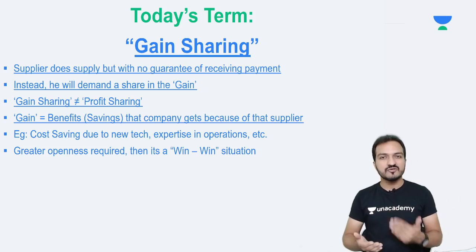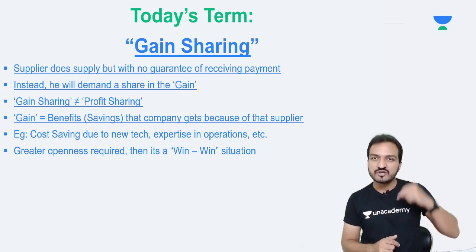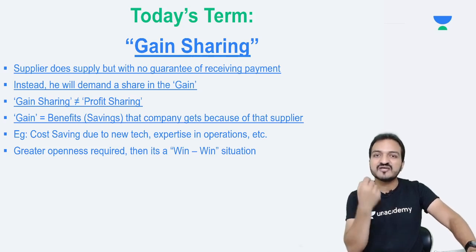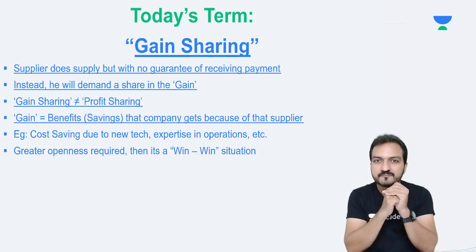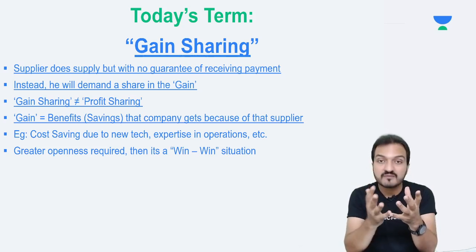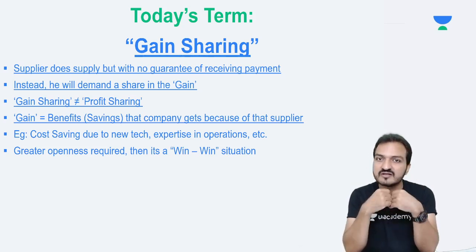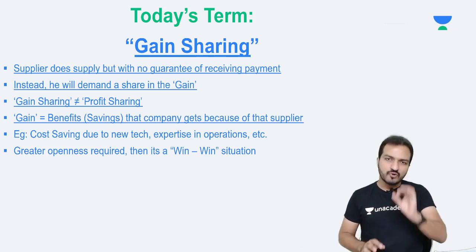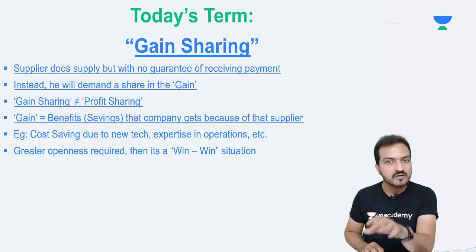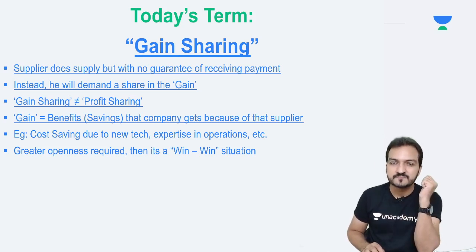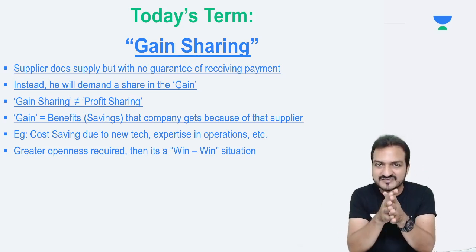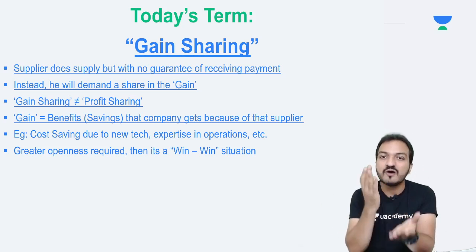If there is proper openness between both parties, then because of his services I save some cost, and whatever money I save, I share that savings with him. This is the sharing which I do — not my net profit. I will not share the net profit of my business, but only this part of the savings that I got because of his services. There has to be proper openness between both entities, and that will lead to a win-win situation.